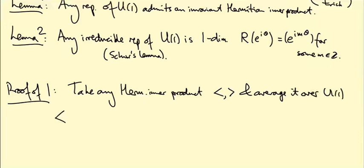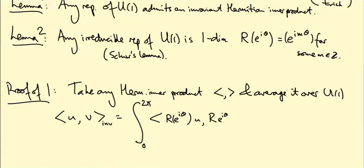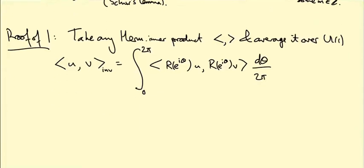In words, I'm going to produce a new inner product ⟨u, v⟩_inv, because it's going to be invariant. This is the integral from 0 to 2π of the old inner product between R(e^{iθ})u and R(e^{iθ})v, times dθ over 2π. The factor of 1/(2π) is there because if we start with an already-invariant inner product and integrate from 0 to 2π, we pick up a factor of 2π that we don't want.